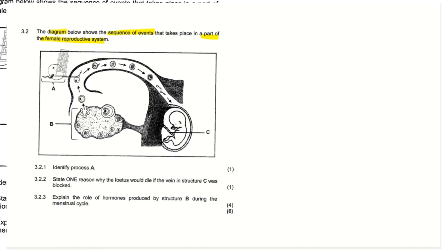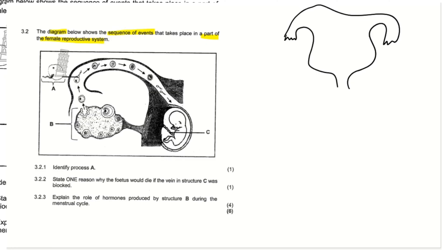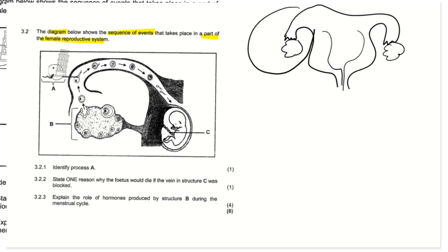I'm sure all of us can see which part of the female reproductive system this is. I always draw the female reproductive system something like this — with ovaries on either side. So now here we are just showing a section of it, just one side of the female reproductive system. We have just zoomed in.